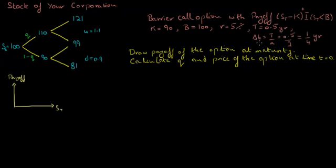The length of each period, denoted by delta T, equals the time to maturity divided by the number of periods. Since this is a two-period binomial tree model and the time to maturity is 6 months, the length of each period is 3 months, or a quarter of a year. We are asked to draw the payoff of this option at maturity, calculate Q — the risk-neutral probability of the stock price going up in each period — and the price of the option at time T equals 0.